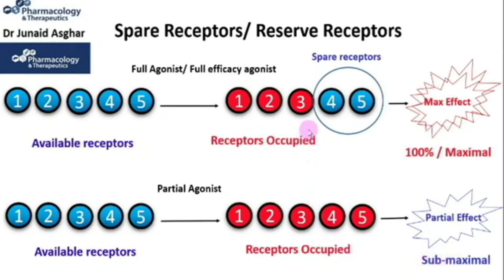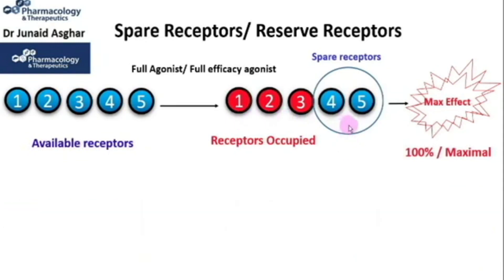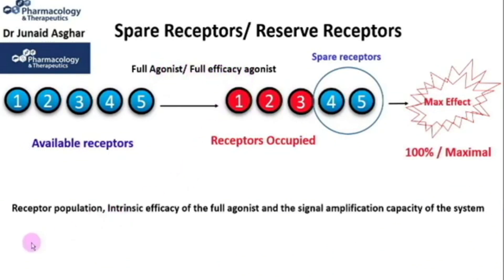Some tissues or cells naturally express more receptors than required to obtain a full response. Thus, for agonists with high intrinsic efficacy, the maximum response can be elicited without occupying all the available receptors present in the tissue. The availability of spare receptors for a full agonist depends upon the receptor population in a tissue, the intrinsic efficacy of the full agonist involved, and the signal amplification capacity of the system.